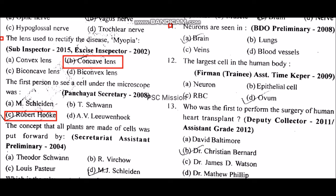The concept that all plants are made up of cells was put forward by Schleiden. Neurons are seen in the brain. The largest cell in the human body is the ovum.